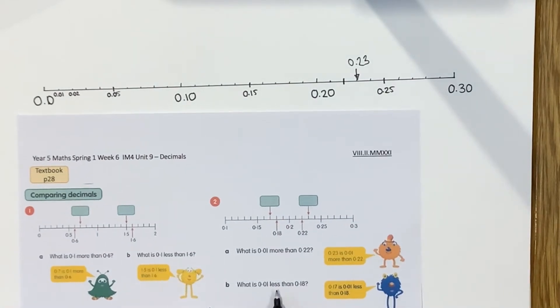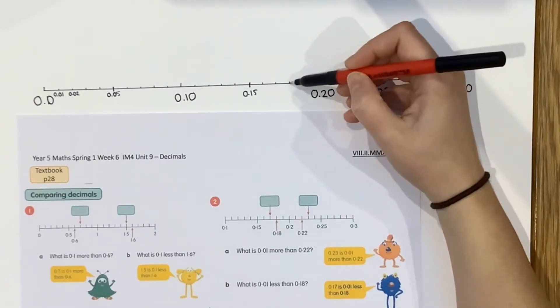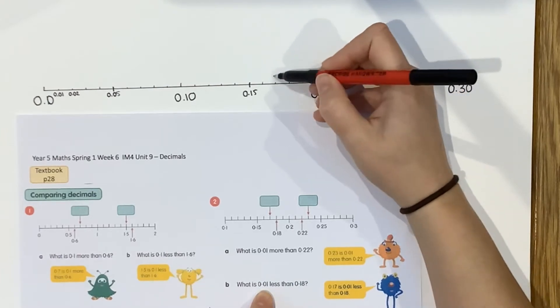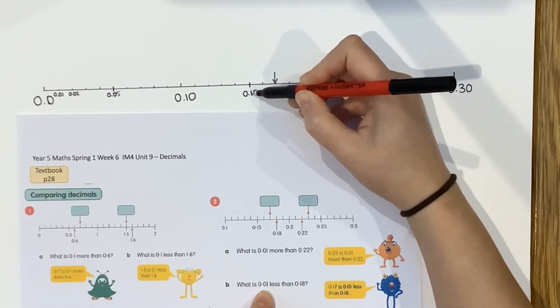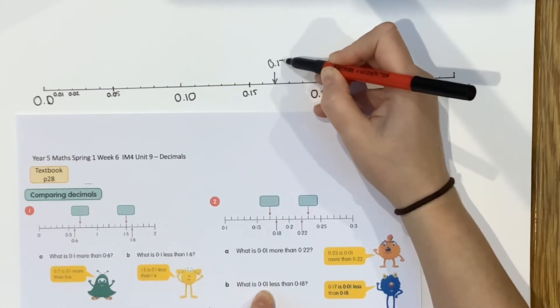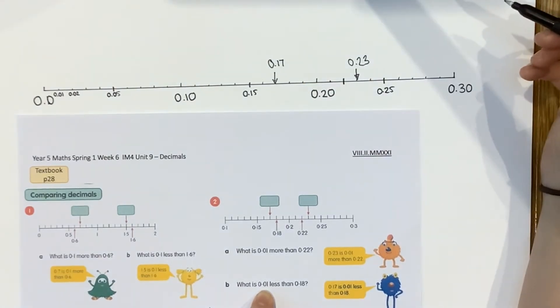So I'll find 0.22 on my number line. Here it is. And 0.01 more than is going to be here. And I know that that's 0.21, 0.22, 0.23. Okay, 0.23 is 0.01 more than 0.22. And going in the other direction, what is 0.01 less than 0.18? Well, I'll find 0.18. I'm going to go 100th less. So I'm going to go back along my number line. 0.15, 0.16, 0.17 is 0.01 less than 0.18.